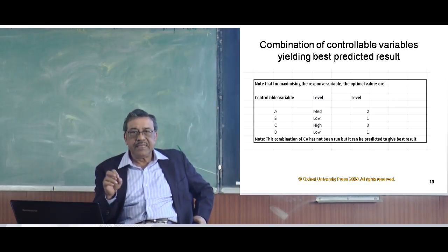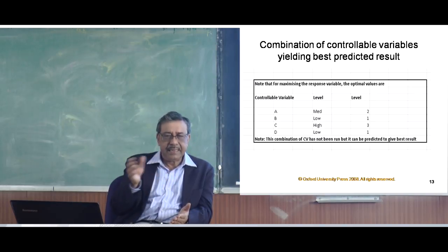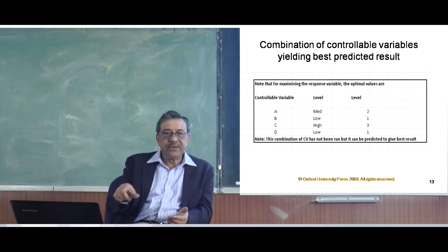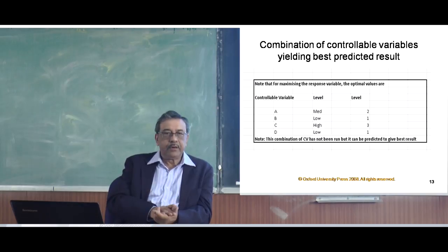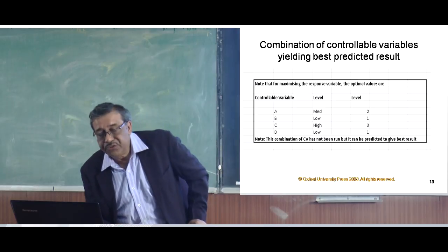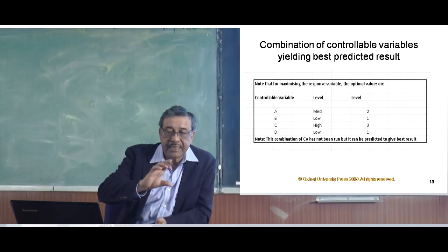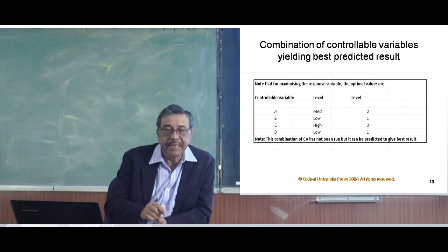You will notice that combination 2, 1, 3, 1 is not part of my original experiment. I had 9 runs in which I had chosen combinations of a, b, c and d, and 2, 1, 3, 1 was not among them. Yet I am able to predict that this particular combination will give me the best possible output. This is the beauty of the Taguchi experiment — even though you have selected a small number of runs, you are able to predict what will give the best results even though that combination has not been run.